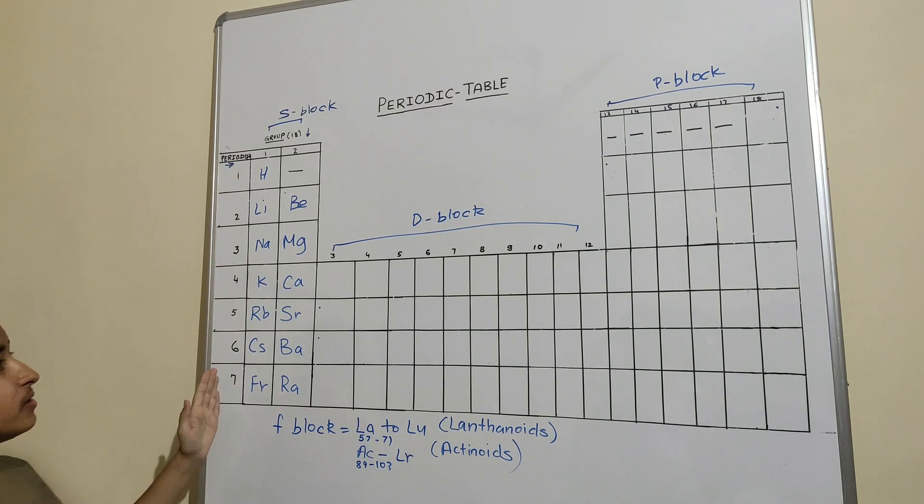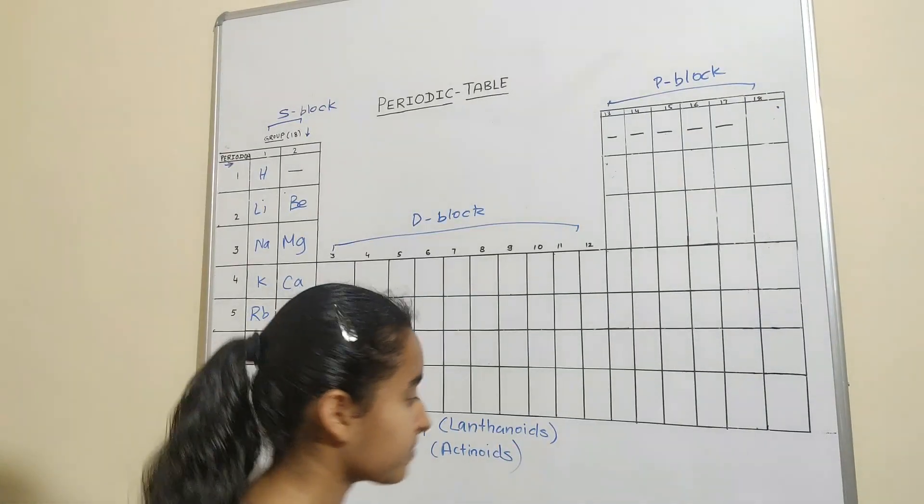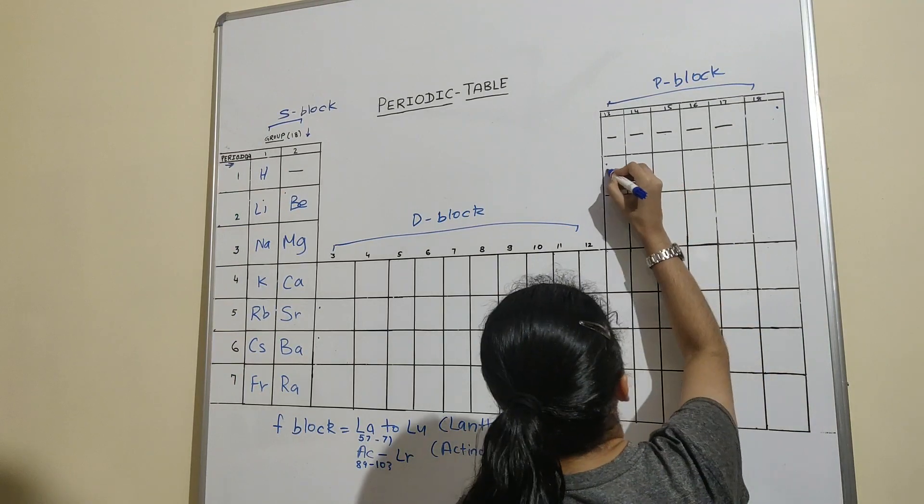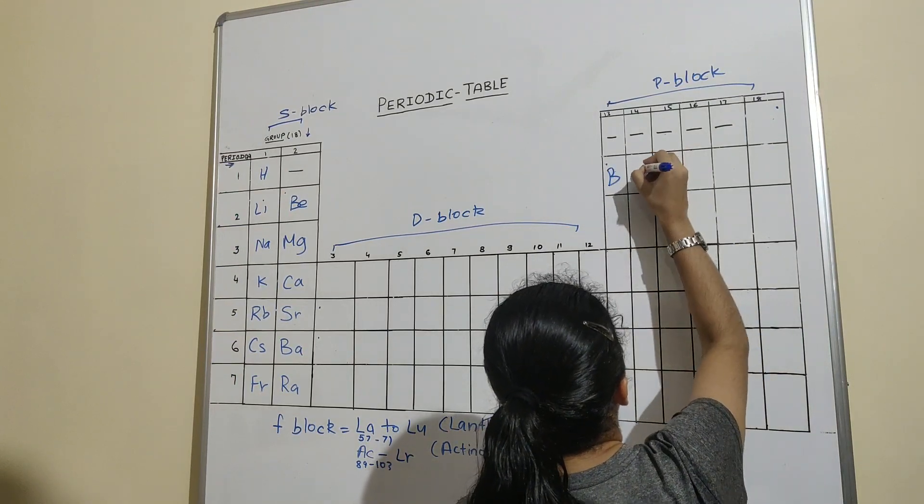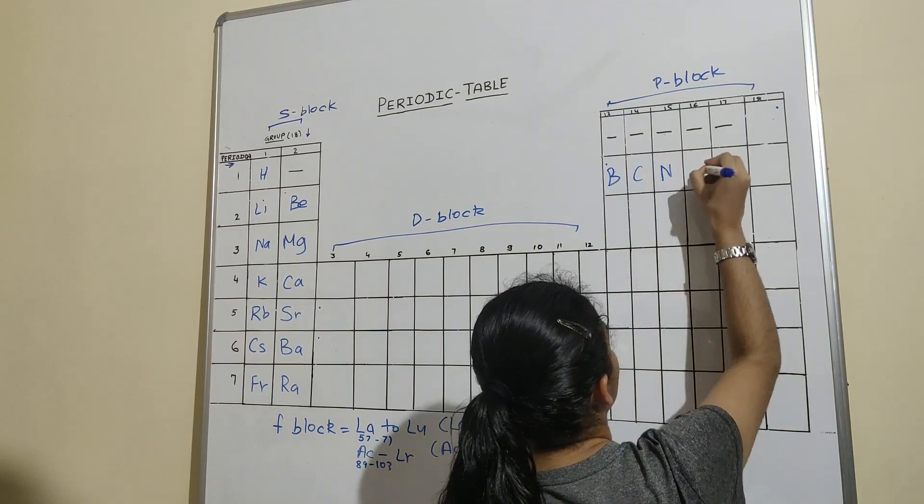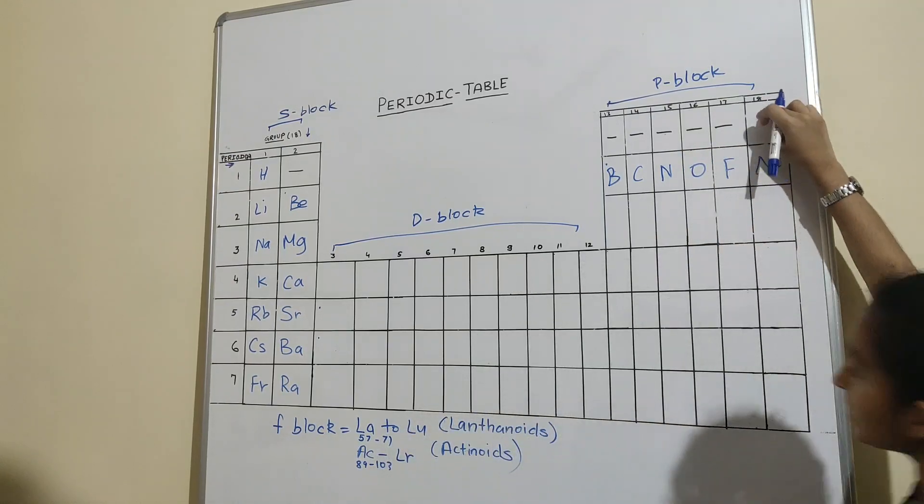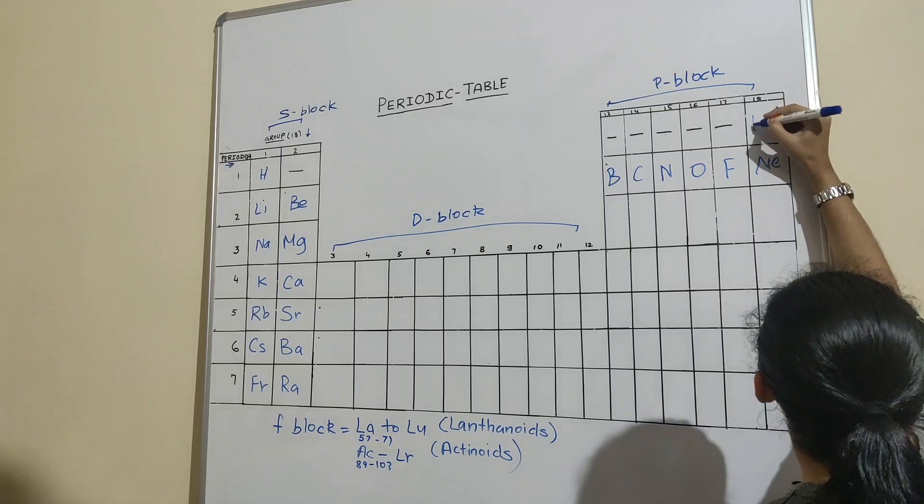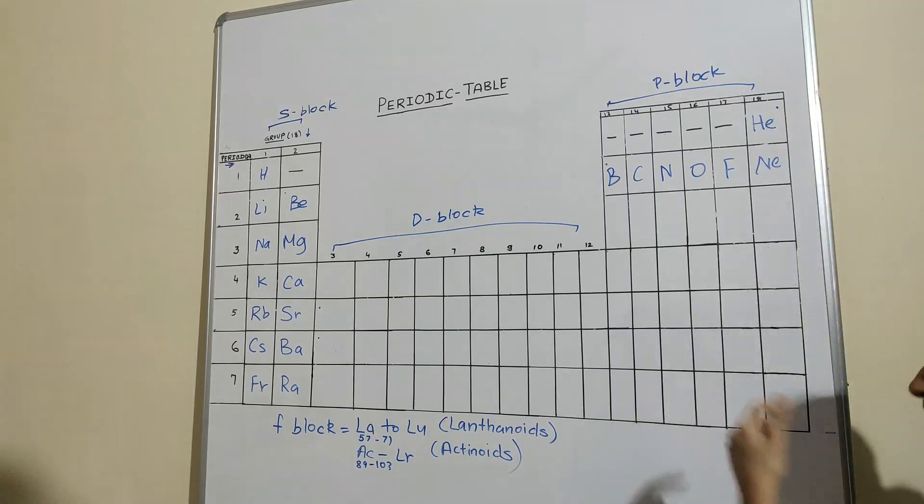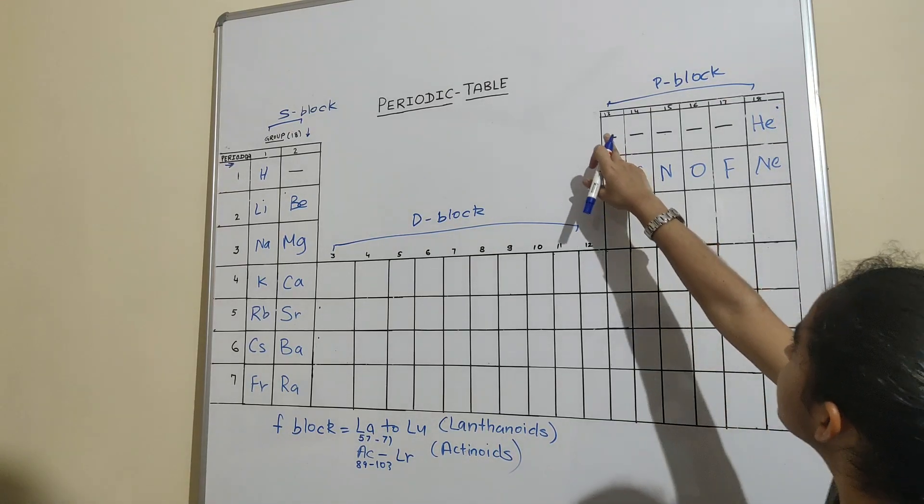Now we'll move on to the P-block. So the fifth element is Boron, Carbon, Nitrogen, Oxygen, Fluorine, and Neon. And the second element of the periodic table is He, that is Helium.